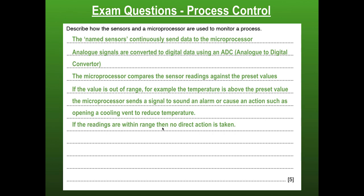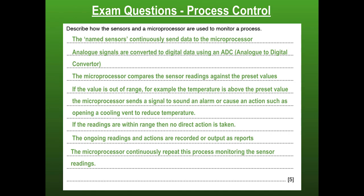If the readings are within range, then no direct action is taken — a little if-else. Those outgoing readings and actions will be recorded or output as reports, since we're collecting data as we go. And then this process will be repeated again and again — it is a continuously repeating process. These are key answers that apply to any process control question regardless of scenario. As long as you put the right sensor name and mention that sensor with detail, describe the action or alarm, and remember: sensors send data to microprocessor, converted through ADC, microprocessor compares to preset values, acts if over, nothing if not, records readings, repeats.